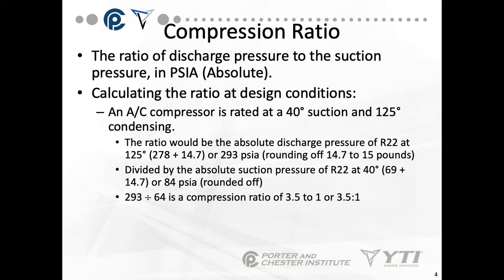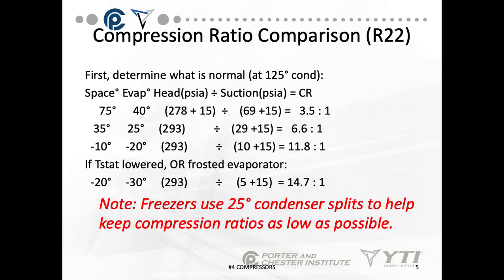That 3.5:1 is the design condition — we know from design what the ratio should be. Now we need to determine what it actually is. At different space temperatures, evaporator temperatures, and head pressures, we'll have different compression ratios. At a space temperature of 75° and evaporator of 40°, we have 3.5 to 1. If we lower the evaporator temperature to 25° — lowering the suction pressure — we get a 6.6 to 1. Those two differences significantly changed the compression ratio.